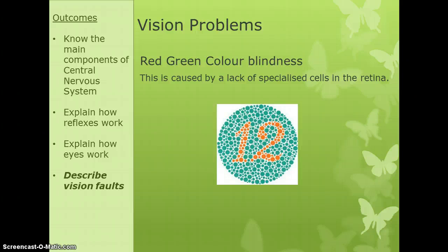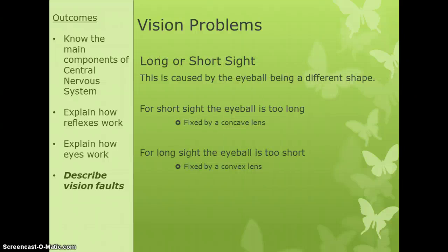The first vision problem is red-green color blindness, caused by a lack of specific color detectors in the eye. It is a genetic disorder and is much more prevalent in men than women. A colorblind person would not be able to see the number in the middle of the test image.